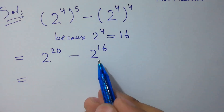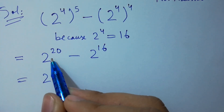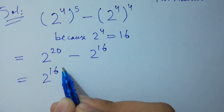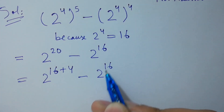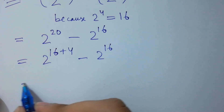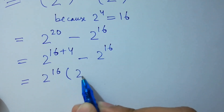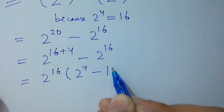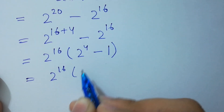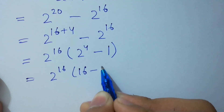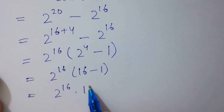Here, we take common 2 to the power 16. We can write 2 to the power 16 plus 4, which is 20, minus 2 to the power 16 as it is. Taking 2 to the power 16 as common, we have 2 to the power 4 minus 1. Next step: 2 to the power 16 times 2 to the power 4 equals 16, minus 1. And 16 minus 1 equals 15. Very very easy.